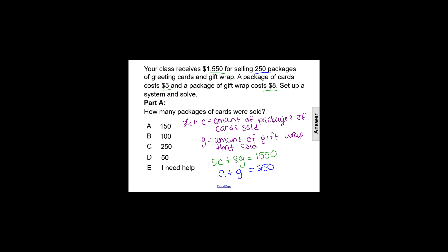There's our system that we want to solve. In this case, we want to solve for C, the amount of packages of cards sold, to answer this question. So we're going to use substitution to solve this system, since the second equation can easily be solved for a variable because of those coefficients of 1. Since I want to solve for C, I'm going to actually solve for G in this equation, because then I can substitute the expression that has C in the other equation and solve for C.